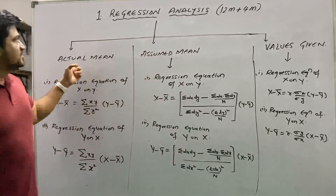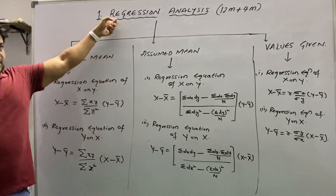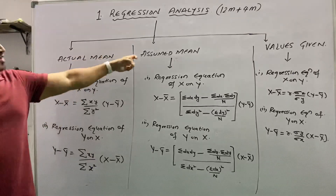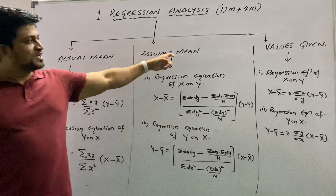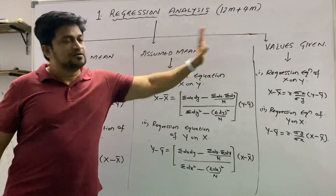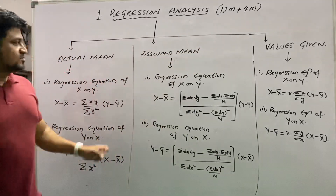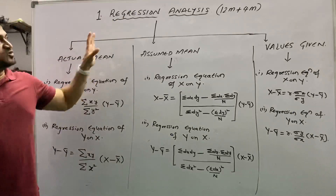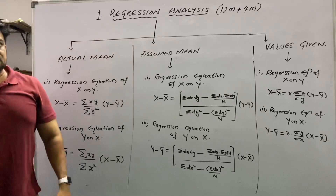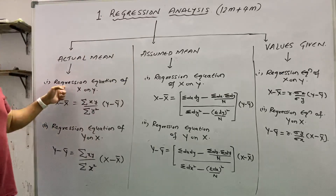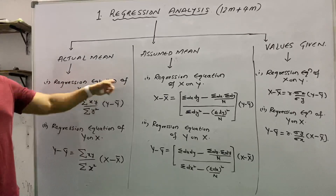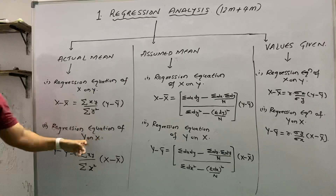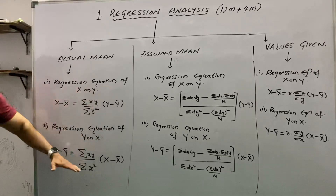Coming back, in regression analysis we have three types: actual mean problems, assumed mean problems, and problems based on given values. In the exam, they will ask you to find equations of regression — either the regression equation of x on y, or the regression equation of y on x. So these two equations you have to remember for each type.